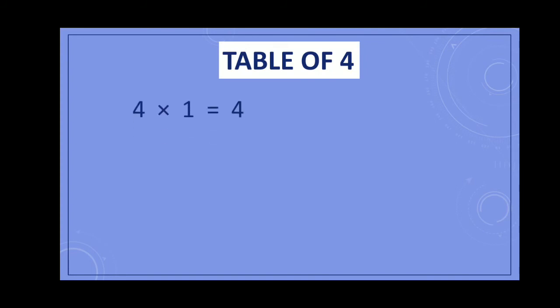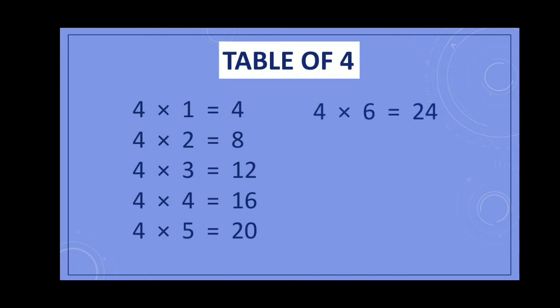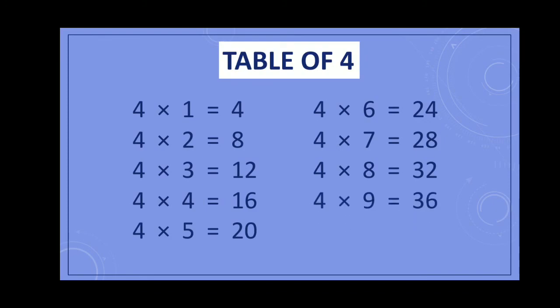Now it's time for the table of 4. Learn the table of 4 and write it in your math copy. 4 ones are 4, 4 twos are 8, 4 threes are 12, 4 fours are 16, 4 fives are 20, 4 sixes are 24, 4 sevens are 28, 4 eights are 32, 4 nines are 36, 4 tens are 40. Now learn the table of 4 and do it in your math copy.